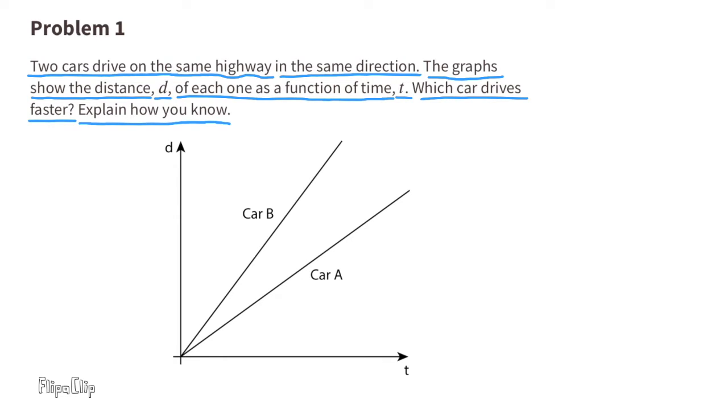Explain how you know. The y-axis, or the vertical axis, is labeled d. It represents distance. The x-axis, or horizontal axis, is labeled t. That represents time.